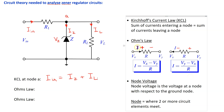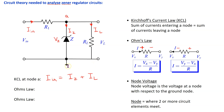Applying Ohm's law to resistor RL: the voltage at one terminal is VZ and at the other terminal is 0 V (ground). Therefore IL = VZ / RL.